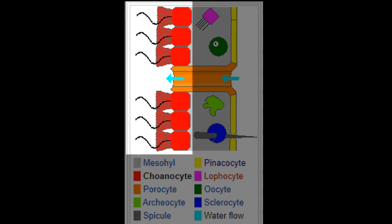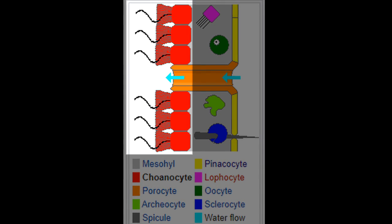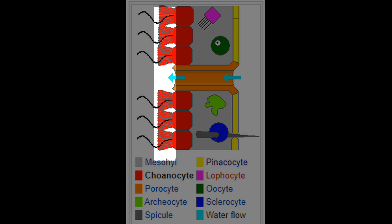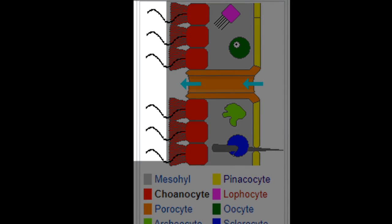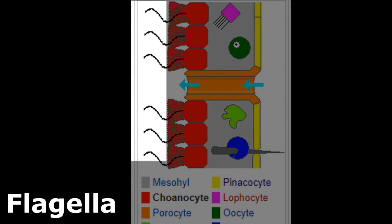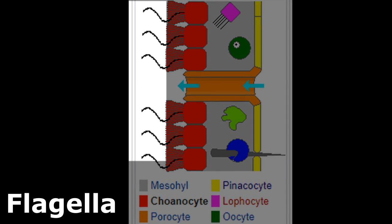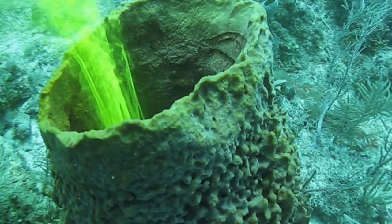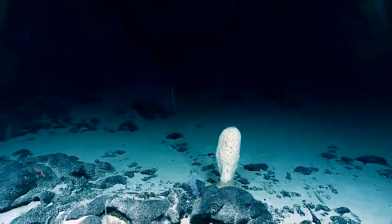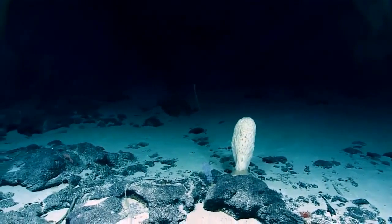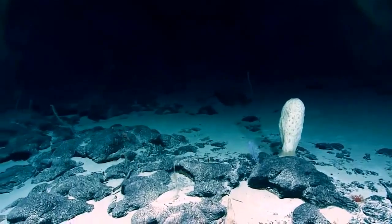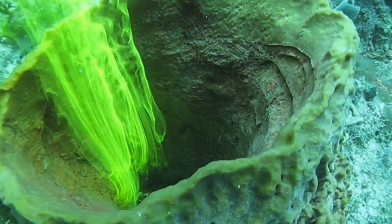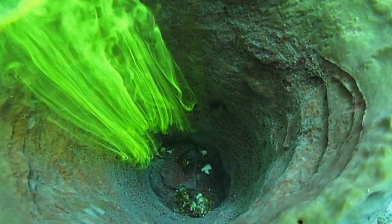An opening called an osculum allows water to leave the sponge. The inner surface of the sponge is lined with cells called collar cells or choanocytes. These collar cells have fine tubes with tiny hair-like structures called flagella that move back and forth, creating a current. This allows water to move into the ostia and out the osculum, bringing in tiny food particles like bacteria, plankton, and detritus. The fine tubes of the collar cells filter out the food particles and take them into the cells for digestion.